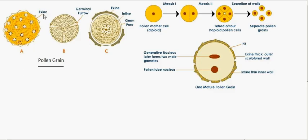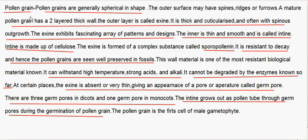Here is a mature pollen grain — the outermost layer is the exine and the innermost layer is the intine. At certain areas there is no deposition of sporopollenin, and that region is known as the germ pore. Each microspore undergoes two meiotic divisions to form four haploid microspores, each having an outer wall — the exine — the intine, and two nuclei. Pollen grains are generally spherical in shape. The outer surface may have spines, ridges or furrows. A mature pollen grain has a two-layered thick wall; the outer layer is called exine.